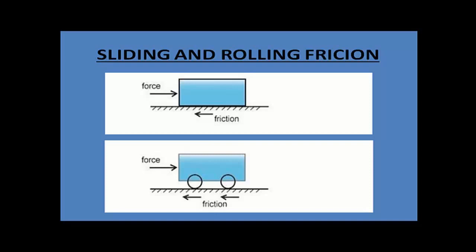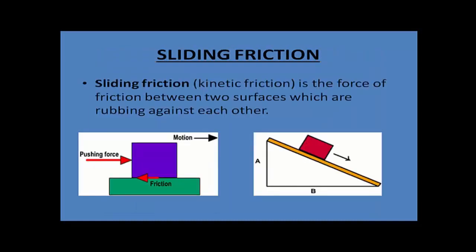What is the difference between the two cases? In the first case, when you push the object, it is sliding over the surface. In the second case, the object is rolling over the surface. Sliding friction is always larger than rolling friction, and that is why the object moves easily when wheels are attached and it is rolling.